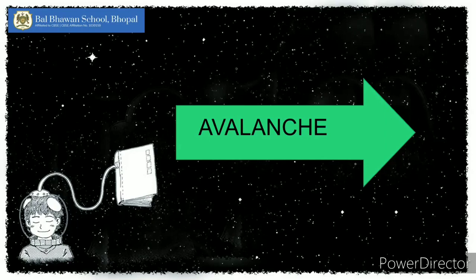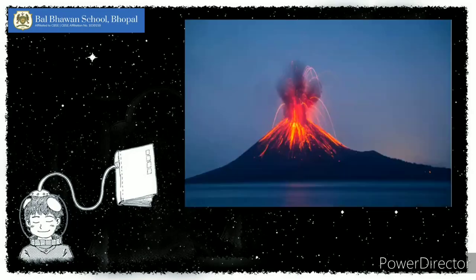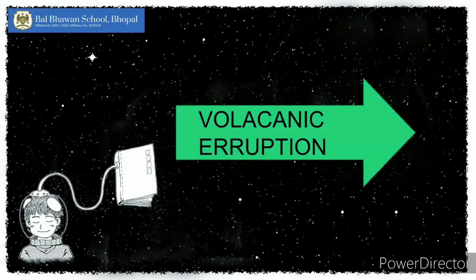And here comes the next picture. Wow, isn't it a beautiful sight to see? Which natural disaster is it? It is volcanic eruption! Do you know which is the largest volcano on earth? It is called the Hawaiian shield volcano.